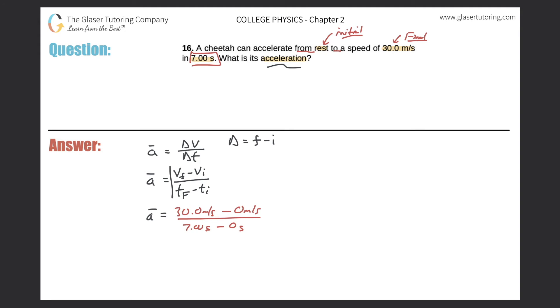So now, to solve for the acceleration, just simply do the easy subtractions. It's going to be 30.0 meters per second divided by 7.00 seconds.